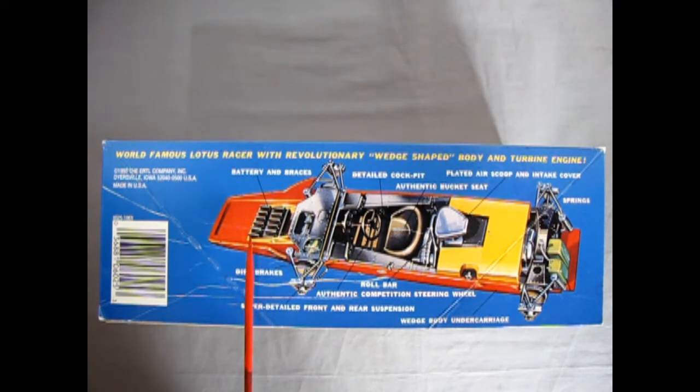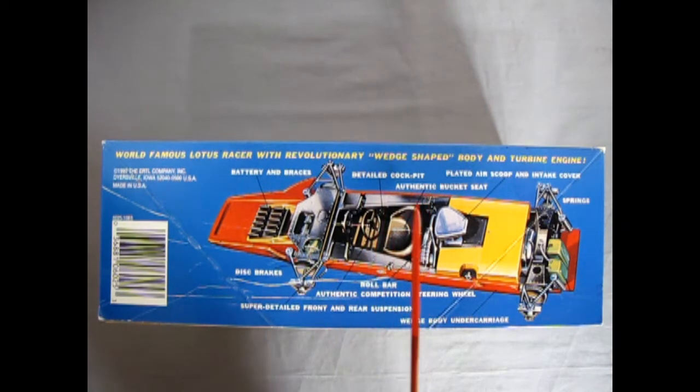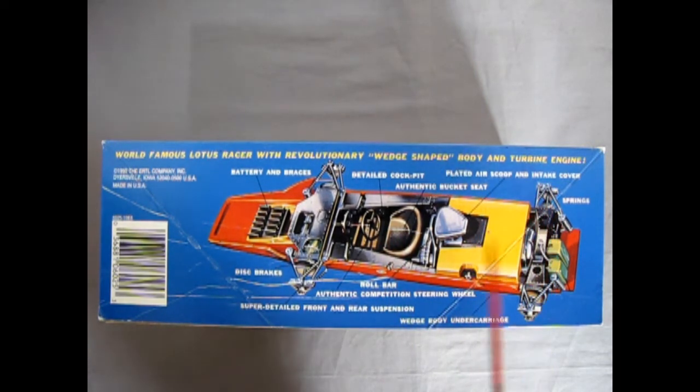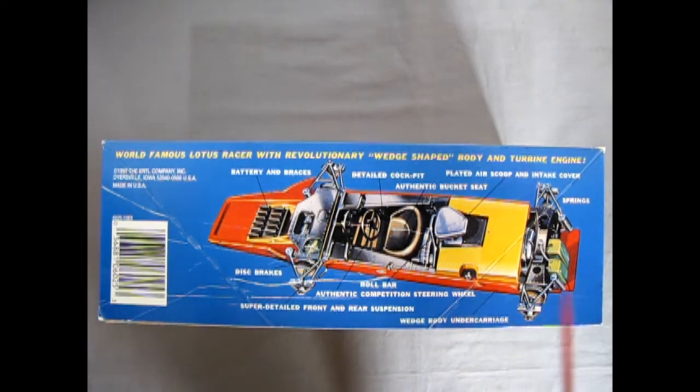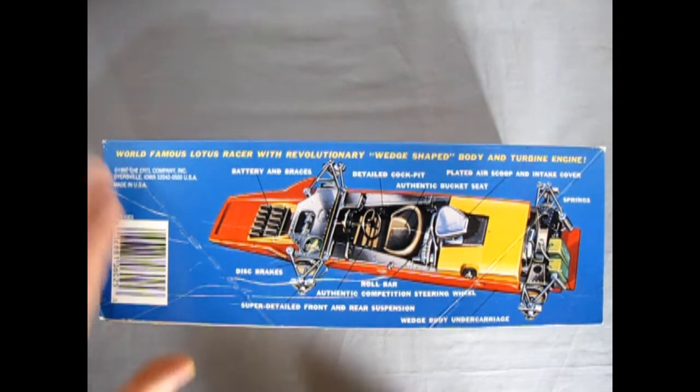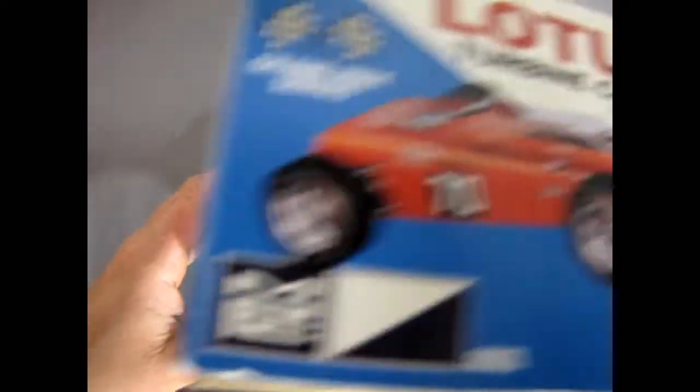You've got the batteries up front. And then we have disc brakes on here. A detailed cockpit. Authentic bucket seat. Here we have an air scoop and intake cover. The rear springs and rear axle. All independent suspension, of course. A roll bar. Authentic competition steering wheel. Super detailed front and rear suspension. And the wedge body undercarriage. And then, of course, we turn over on this side, which looks much the same as the top.